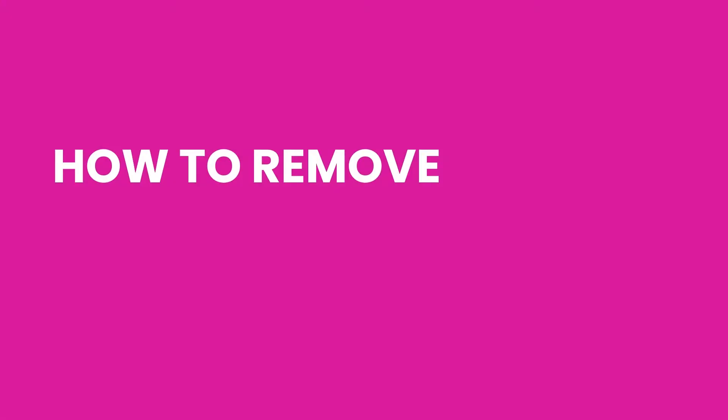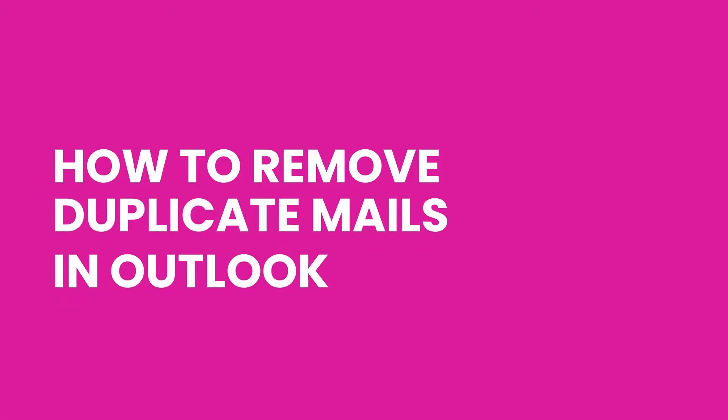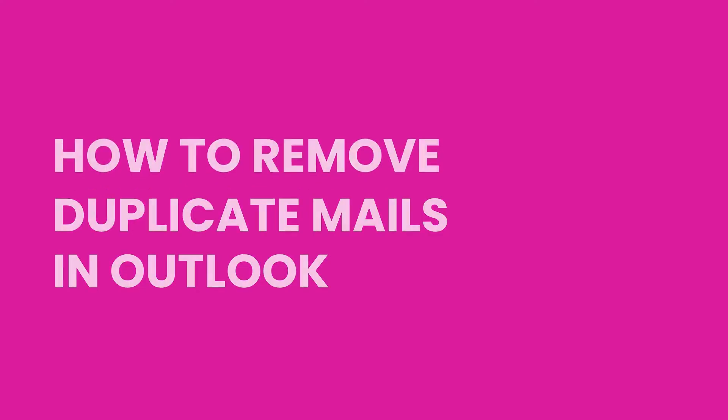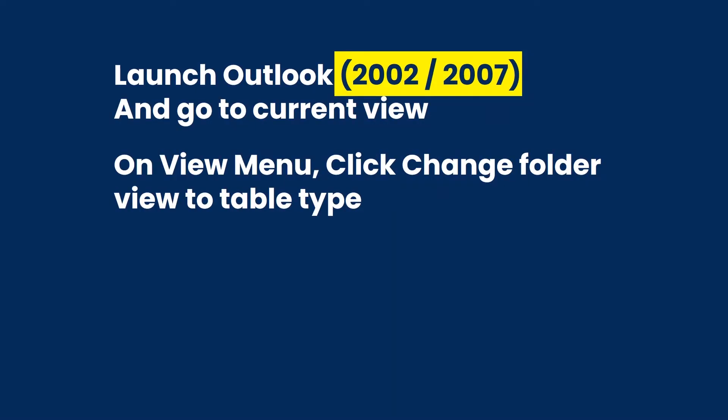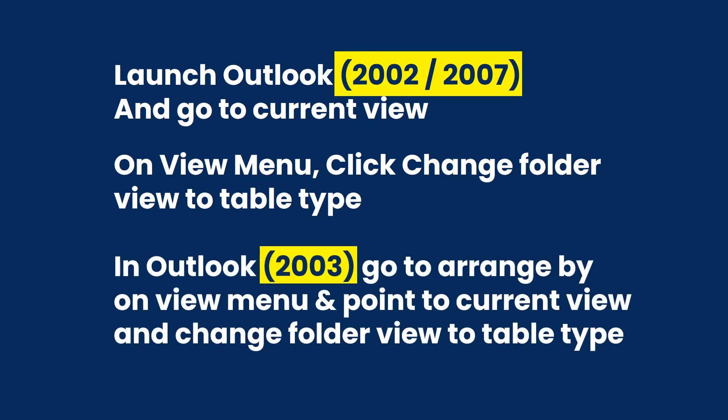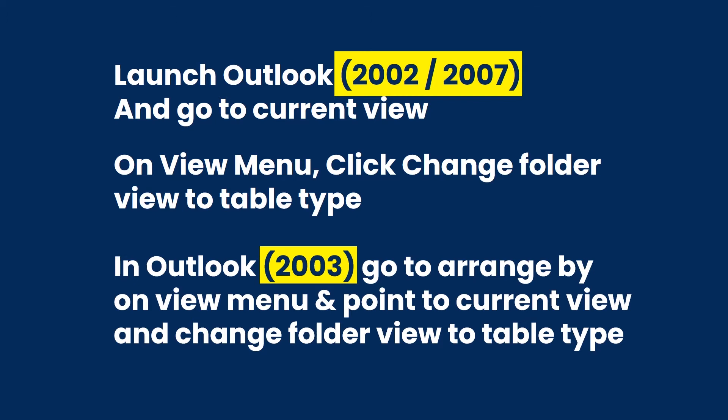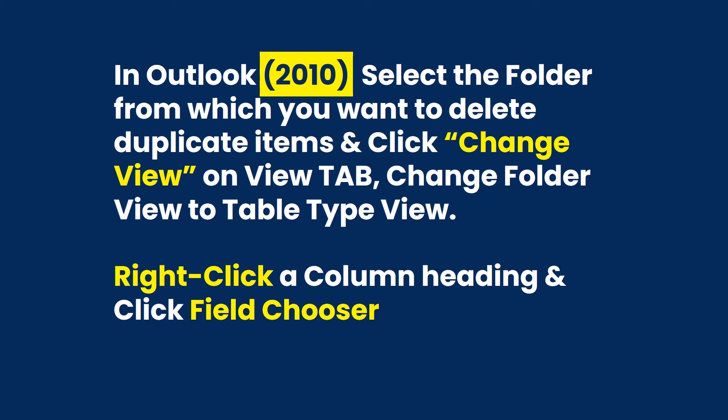Now let's take a look at the steps involved to remove duplicate mails in Outlook. If you are using Outlook 2002 or 2007, go to Current View on the View menu and click Change Folder View to Table type. In Outlook 2003, go to Arrange By on the View menu, point to Current View, then change the folder view to Table type. If you are using Outlook 2010, you can follow the steps as mentioned here.